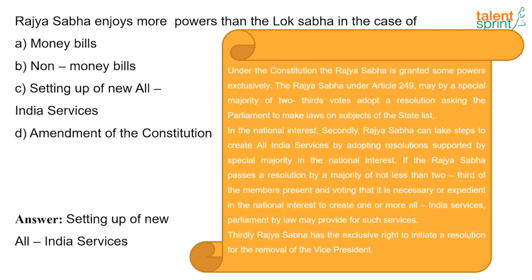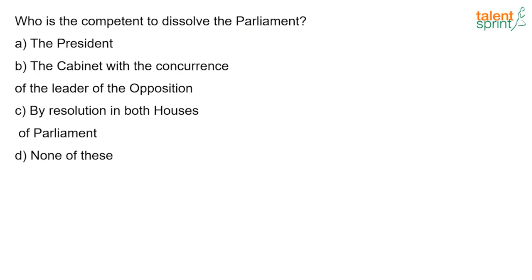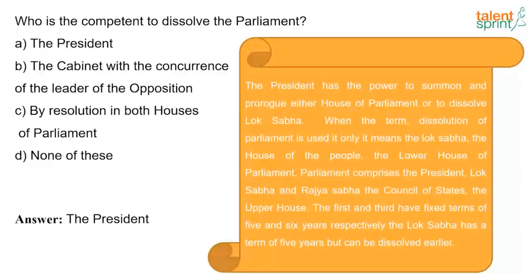Who is competent to dissolve Parliament? The answer is the President. The President has the power to summon and prorogue either house of Parliament or to dissolve Lok Sabha. When the term 'dissolution of Parliament' is used, it only means the Lok Sabha — the House of the People, the lower house. Parliament comprises the President, Lok Sabha, and Rajya Sabha. The Lok Sabha has a term of five years but can be dissolved earlier.